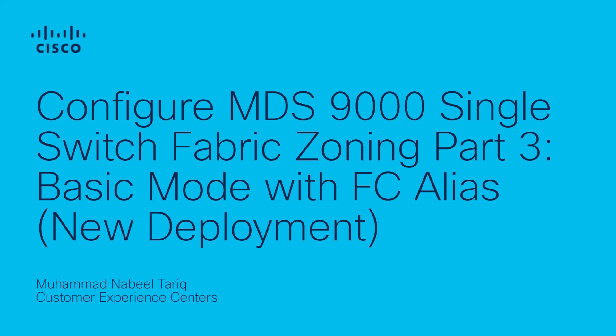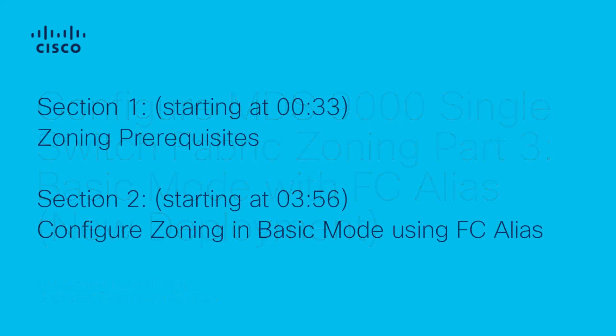In part 3, we will cover the configuration steps for zoning in basic mode on a brand new single switch fabric using FC aliases. This video is split into two sections: section 1 covering the minimum prerequisites for zoning, followed by section 2 covering the configuration steps for zoning in basic mode using FC aliases.